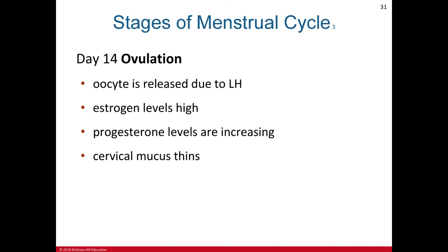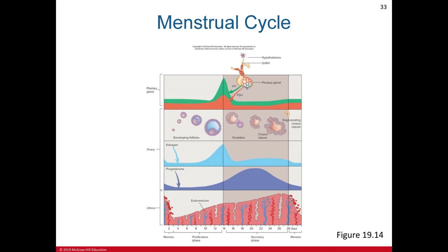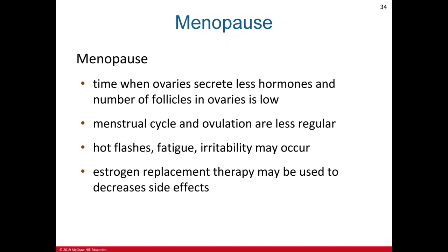Day 14 is ovulation, when the oocyte is released due to the luteinizing hormone; estrogen and progesterone levels are both high and cervical mucus is thinning. Days 15–28 are the secretory phase, between ovulation and the next menses, during which the endometrium prepares for implantation; estrogen levels decrease while progesterone remains high, and cervical mucus thickens. This summary of hormone levels across the four stages — menses, proliferative, ovulation, and secretory — can also be viewed in your anatomy and physiology textbook.